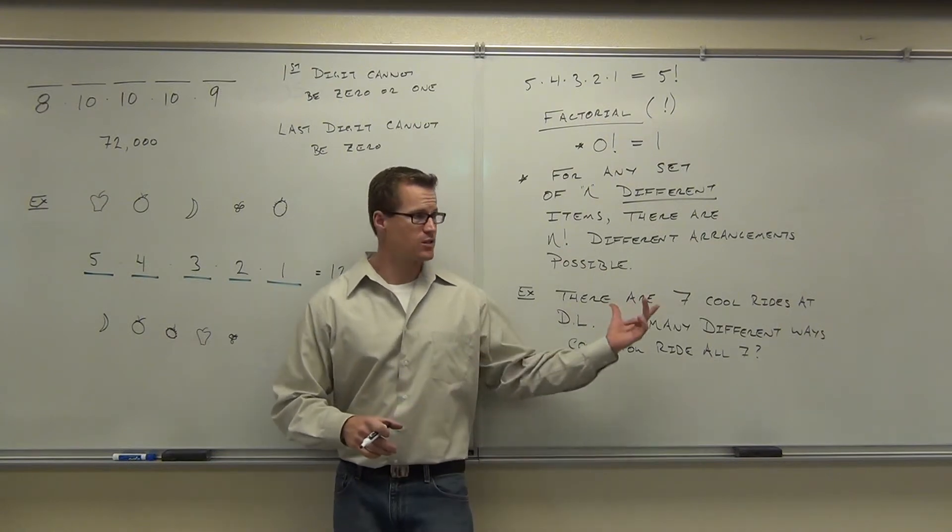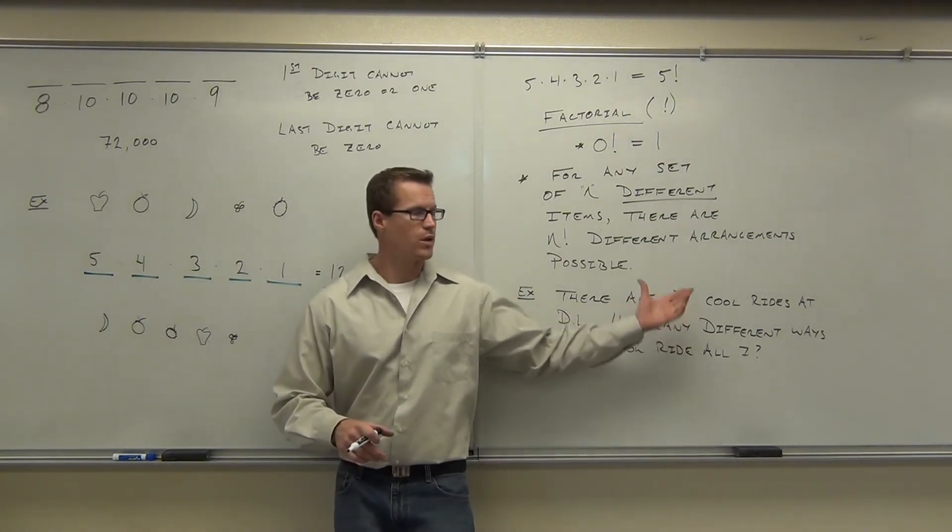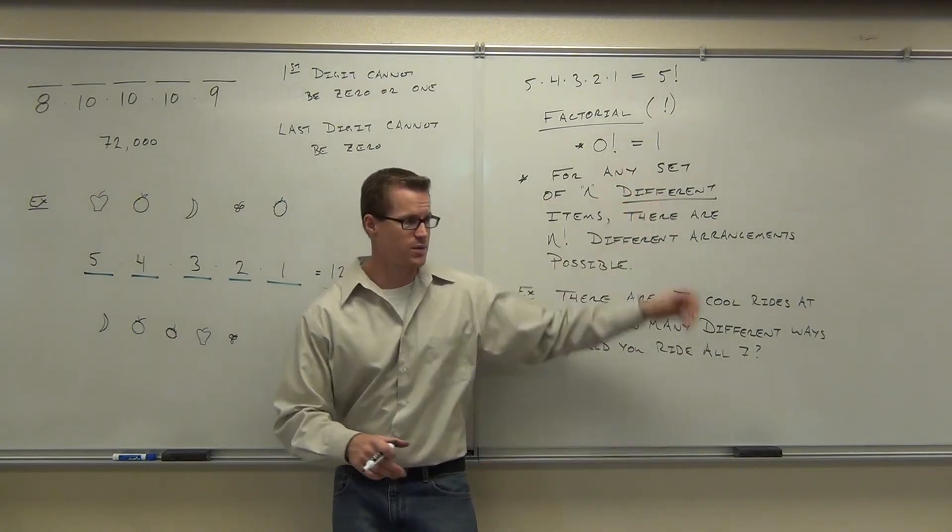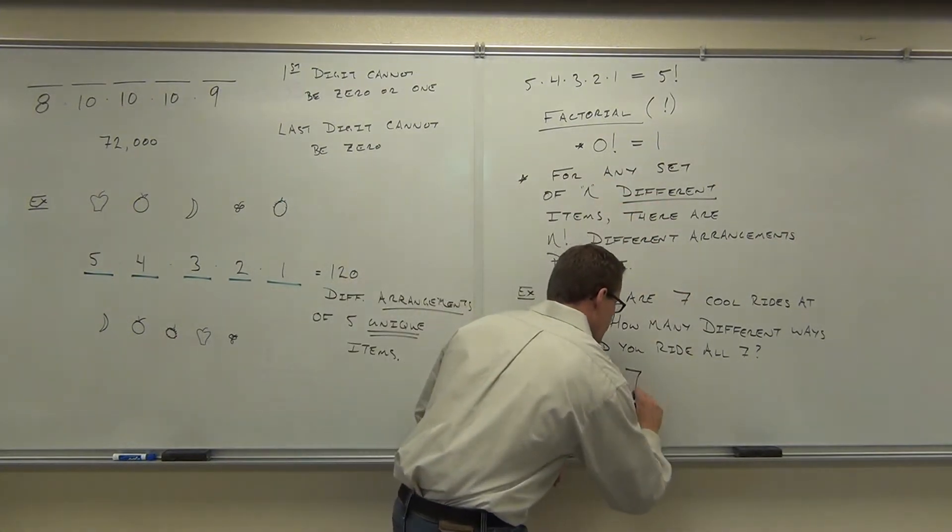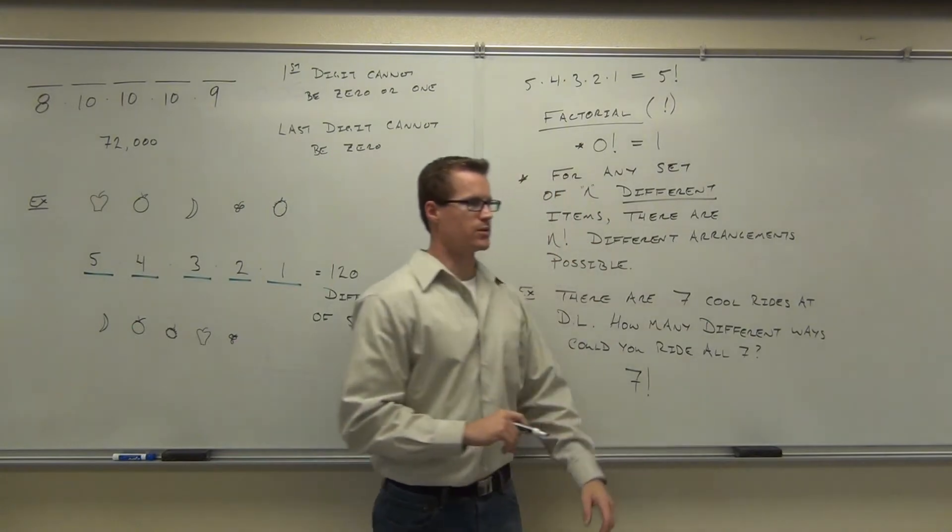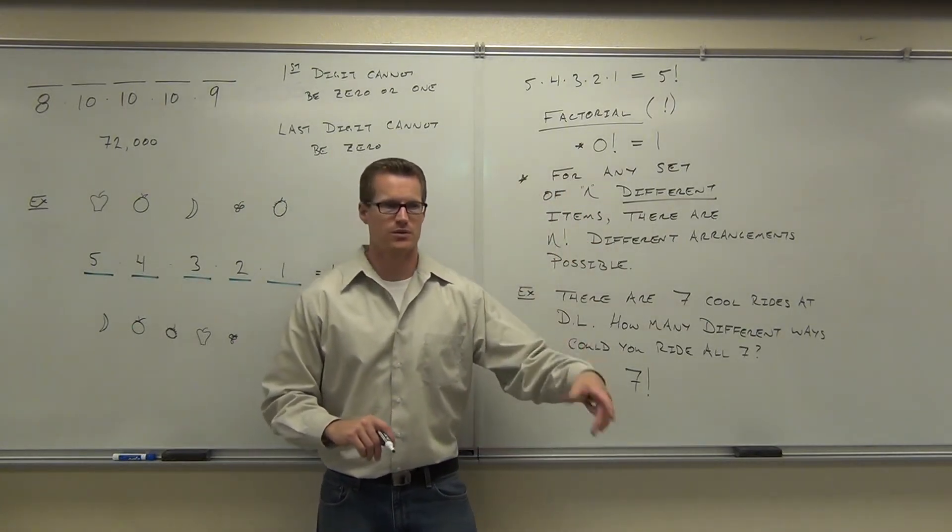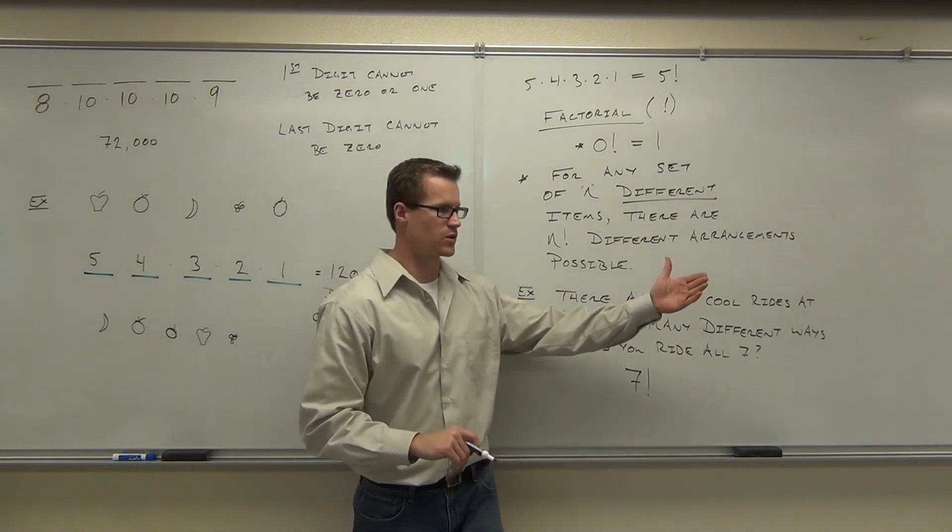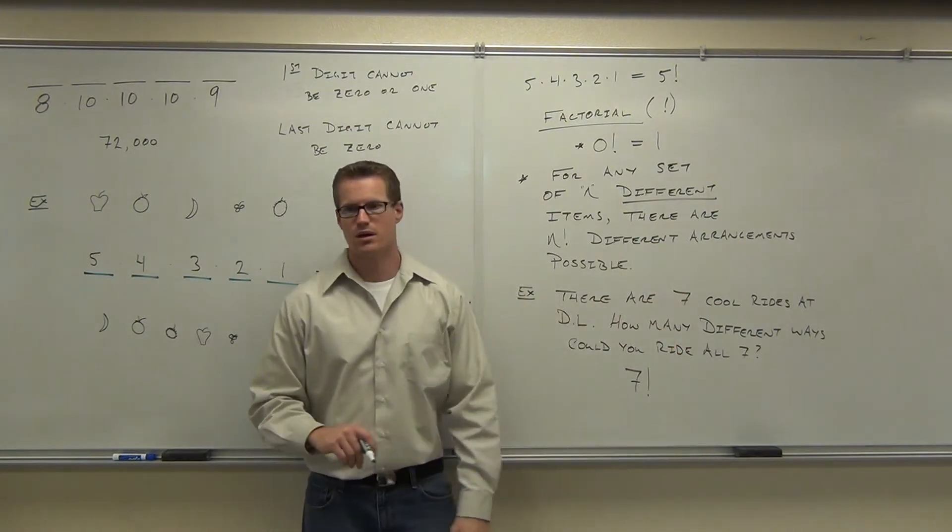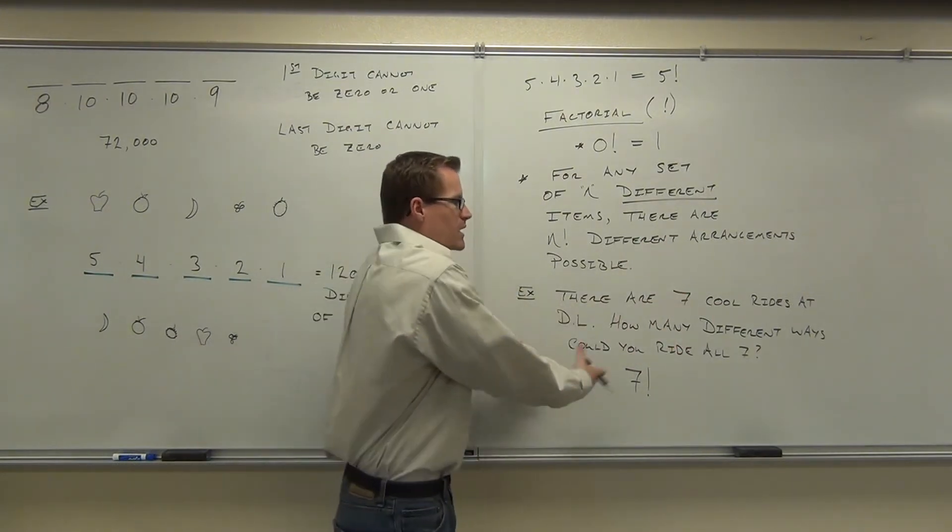So since these are seven distinct different rides, what our factorial says is that we have seven factorial different ways we can ride those. Seven for the first choice, six for the next choice, then five, then four, then three, then two. And then after you exhaust all your resources, you only have one ride you can go on at the very end. So that's how we're getting seven factorial.